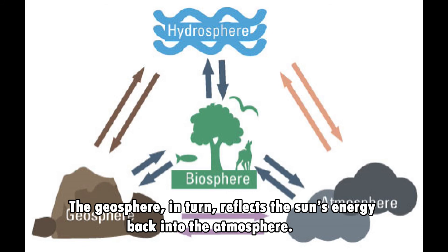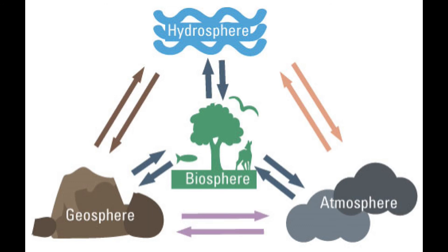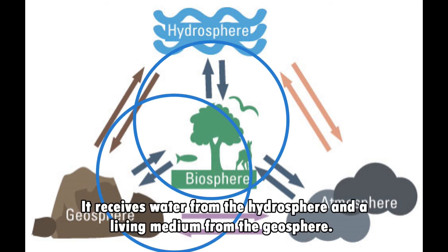The atmosphere provides the geosphere with heat and energy needed for rock breakdown and erosion. The geosphere in return reflects the sun's energy back into the atmosphere. The biosphere receives gases, heat, and sunlight in the form of energy from the atmosphere. It receives water from the hydrosphere and a living medium from the geosphere.